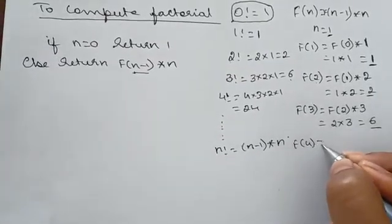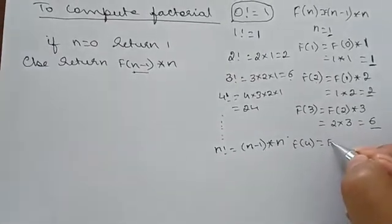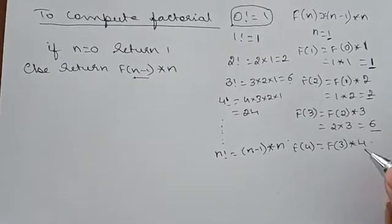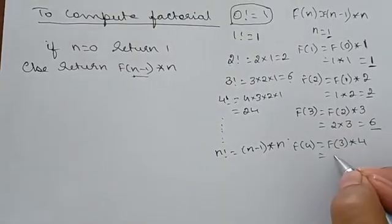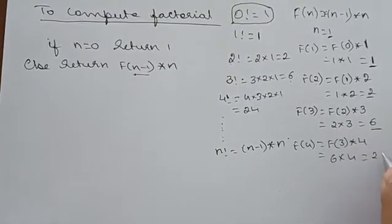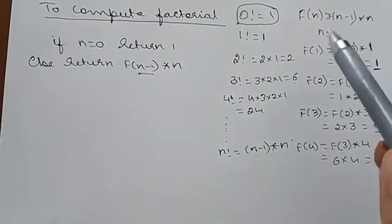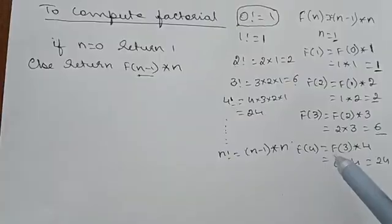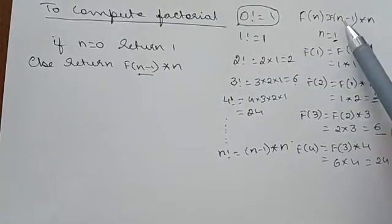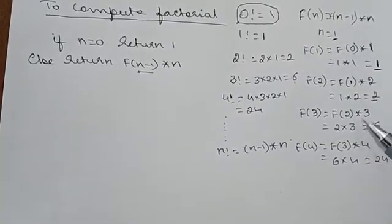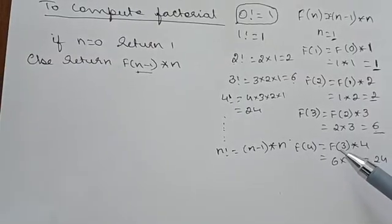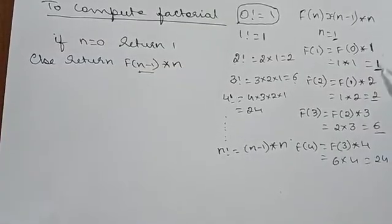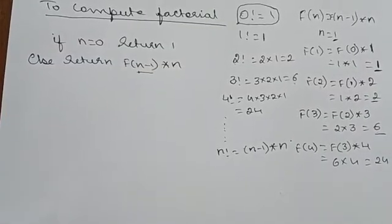For f(4): f(n-1) × n = f(3) × 4 = 6 × 4 = 24. This is how the factorial algorithm works — repeatedly calling f(0), f(1), f(2), f(3) — the same factorial function recursively. Like this, till n we can calculate all values.